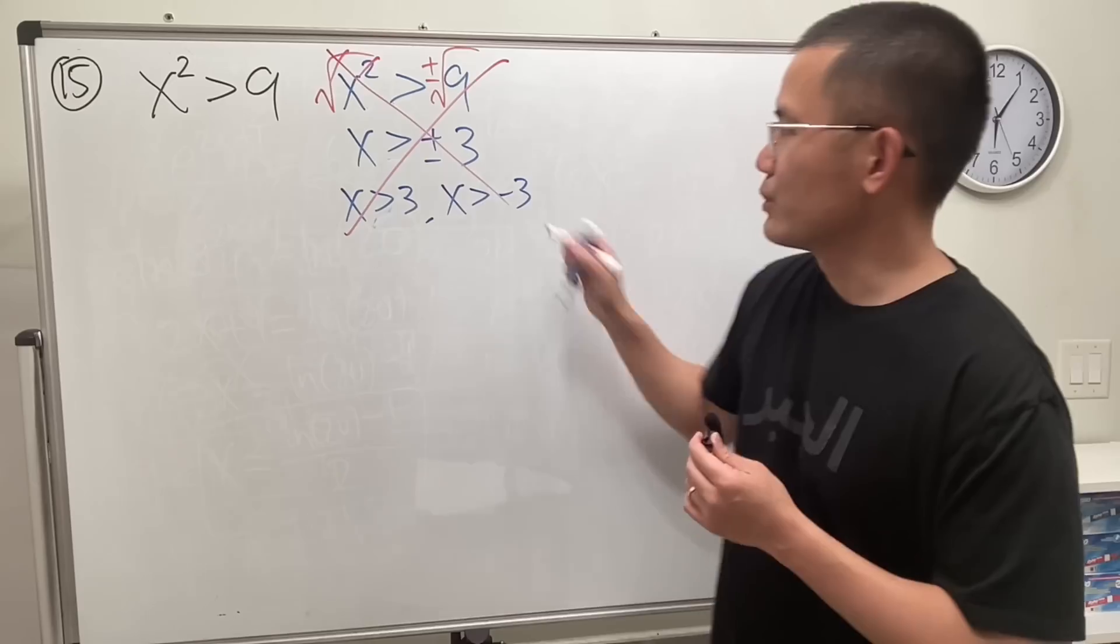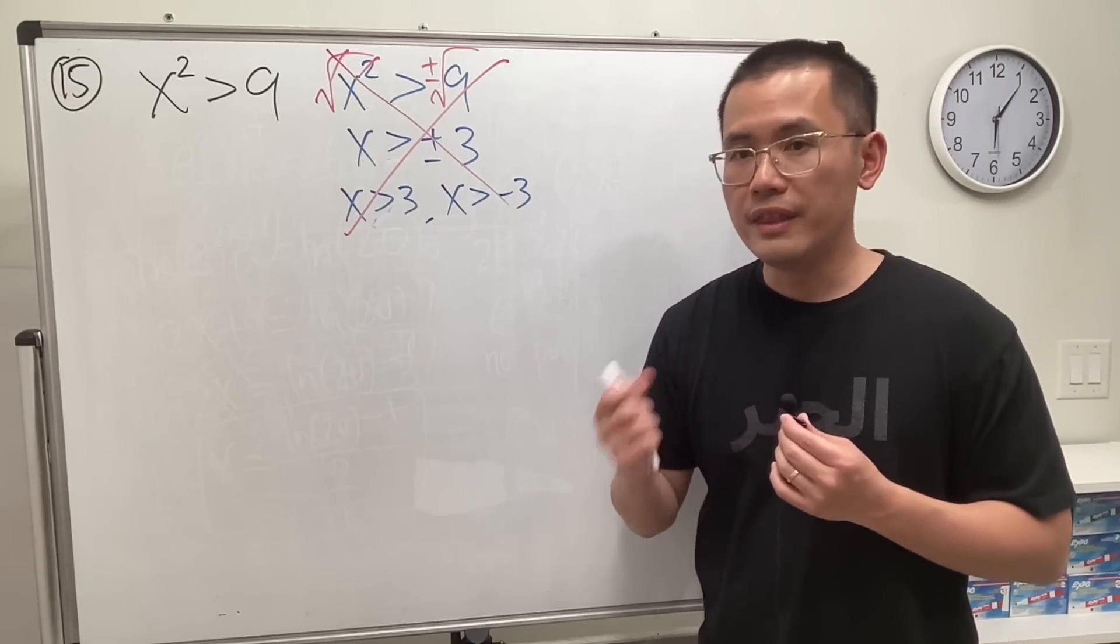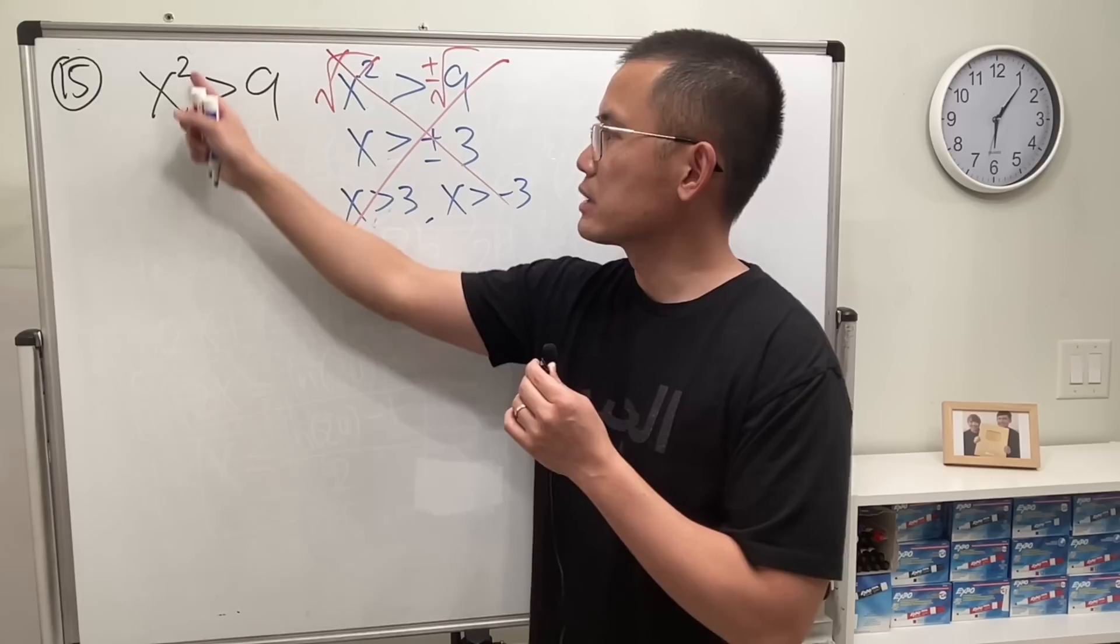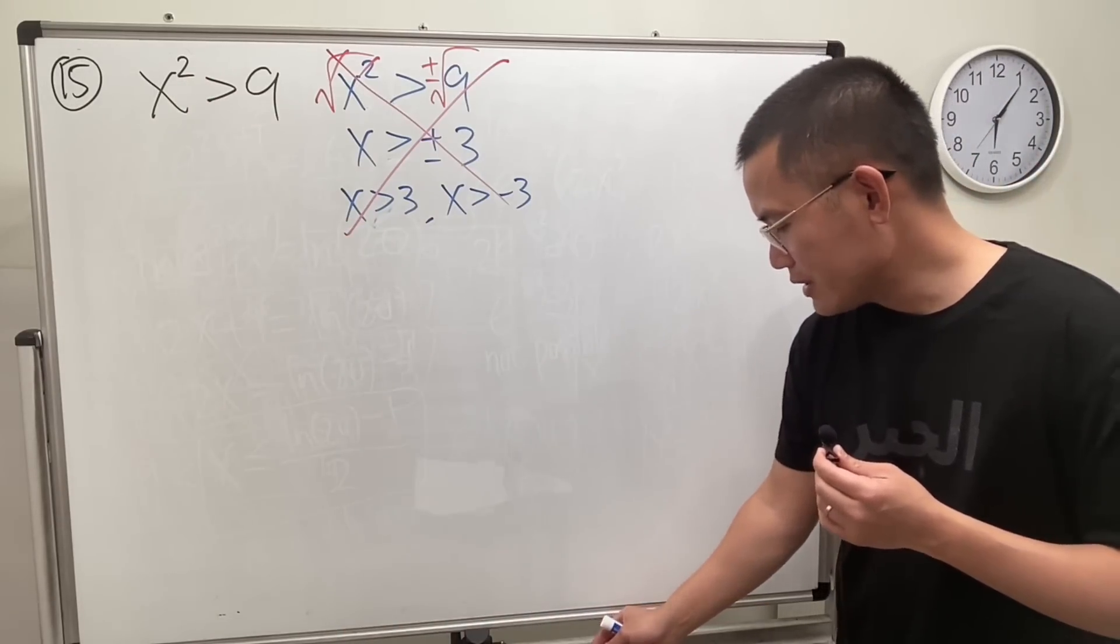No, don't do that. The reason is because here we are dealing with a non-linear inequality. This is x squared, so be really careful. So how exactly can we do it? I'm going to show you guys the safe way to do this. For this one, first make one side equal to zero, so move this to here. Still it's greater than zero. Now factor the left hand side.